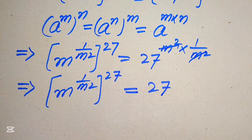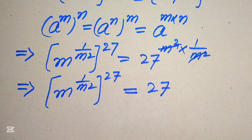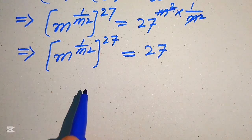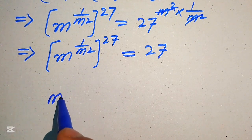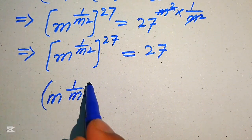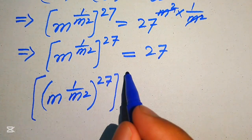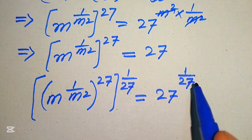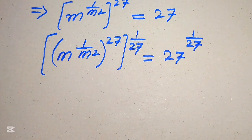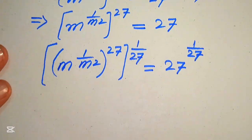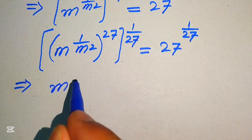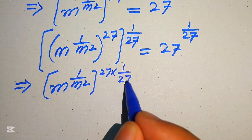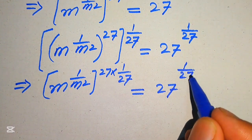We have completed moving variable terms to the left hand side. Now we move the constant term 27 to the right hand side. To eliminate 27 from the left hand side, we take the 27th root on both sides. Applying the exponent law again, we multiply the two exponents: m to the power of 1 over m squared, whole power 27 times 1 over 27, equals 27 to the power of 1 over 27. The 27s cancel, giving m to the power of 1 over m squared equals 27 to the power of 1 over 27.